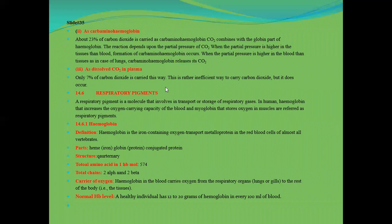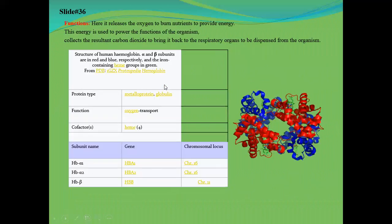Moving to the next slide, the function here: hemoglobin releases oxygen to burn nutrients to provide energy. The function of pigmented proteins is that it releases oxygen to burn nutrients. This energy is used to power the function of the organism, and it collects the resultant carbon dioxide to bring it back to the respiratory organ to be expelled from the organism.